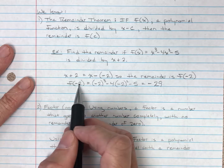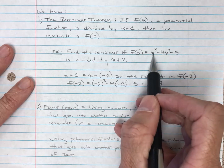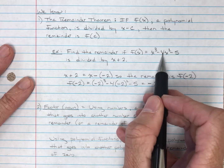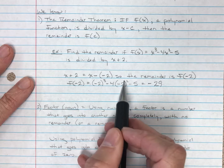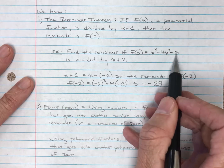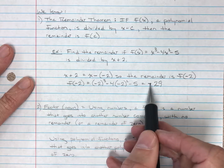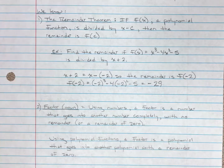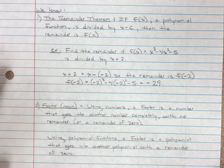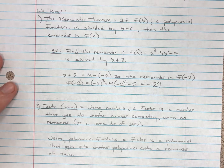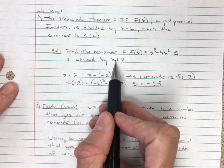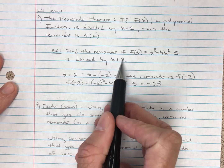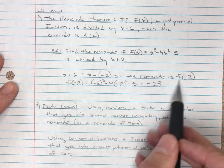f of negative 2 equals negative 2 cubed minus 4 times negative 2 squared minus 5. Putting this into a calculator, the remainder comes out to be negative 29. It's a shortcut — we don't have to do all that long division. We write the divisor with a minus sign, put the c part into the function, and get the remainder.